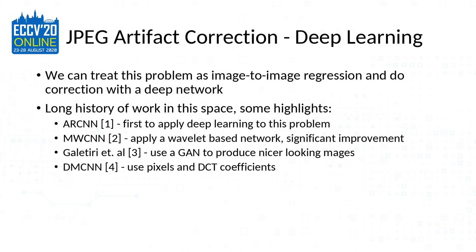The idea is to treat the problem as an image-to-image regression — pixels in, pixels out on a deep network. Here are a few highlights of the prior work, including some interesting ones that use DCT coefficients. Many of these methods use both pixels and DCT coefficients, so these are so-called dual domain methods.